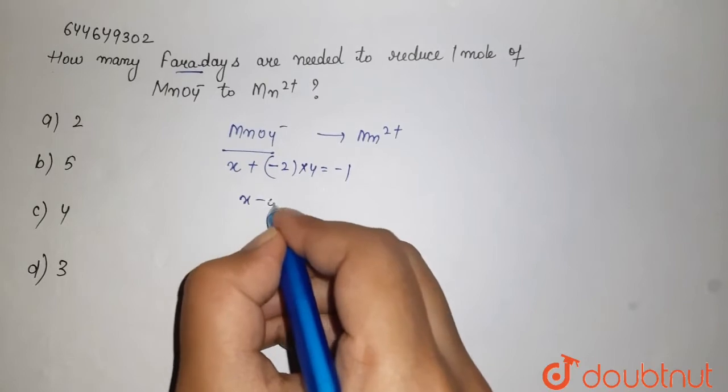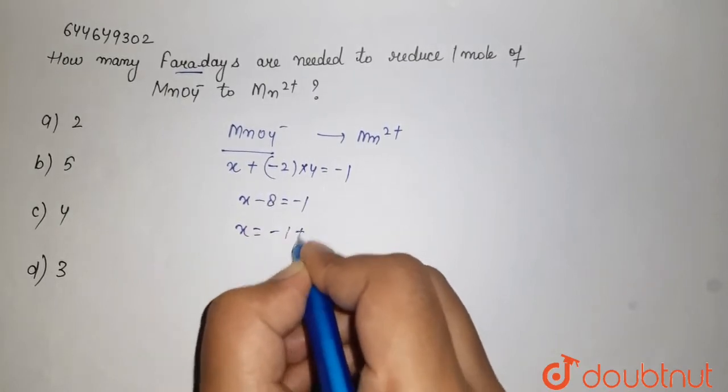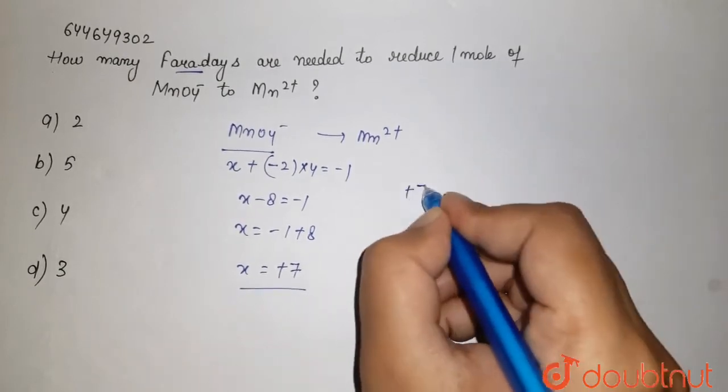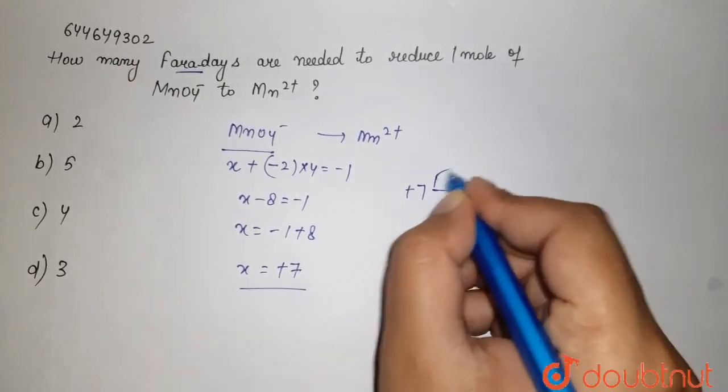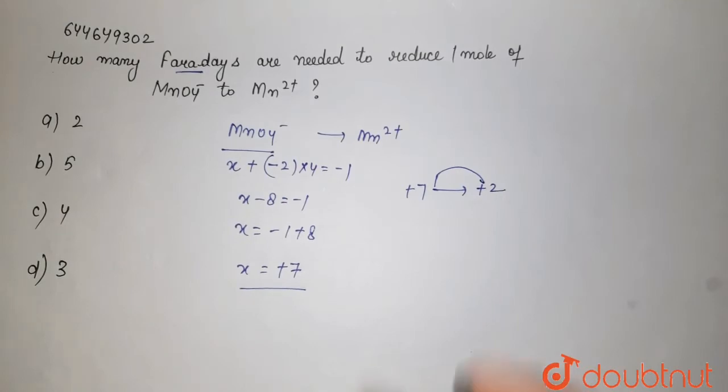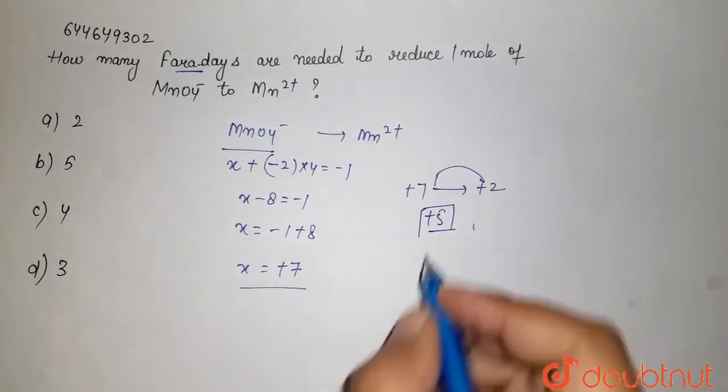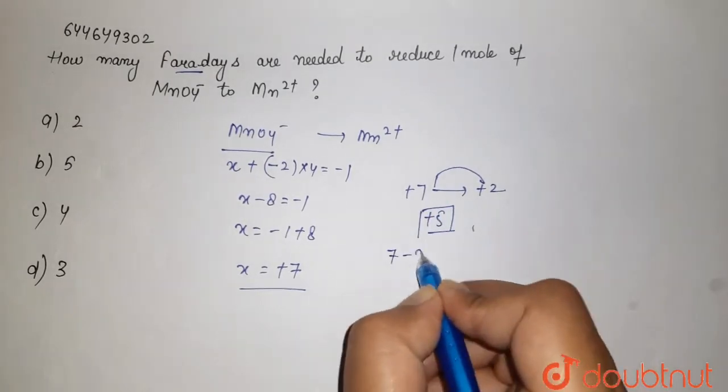Here it is: x minus 8 equals minus 1, which comes out to be x equals minus 1 plus 8, so x equals plus 7. Which means from plus 7 to plus 2 it has been changing. So there is a change of 5 electrons. The change in oxidation state, that is 7 minus 2...